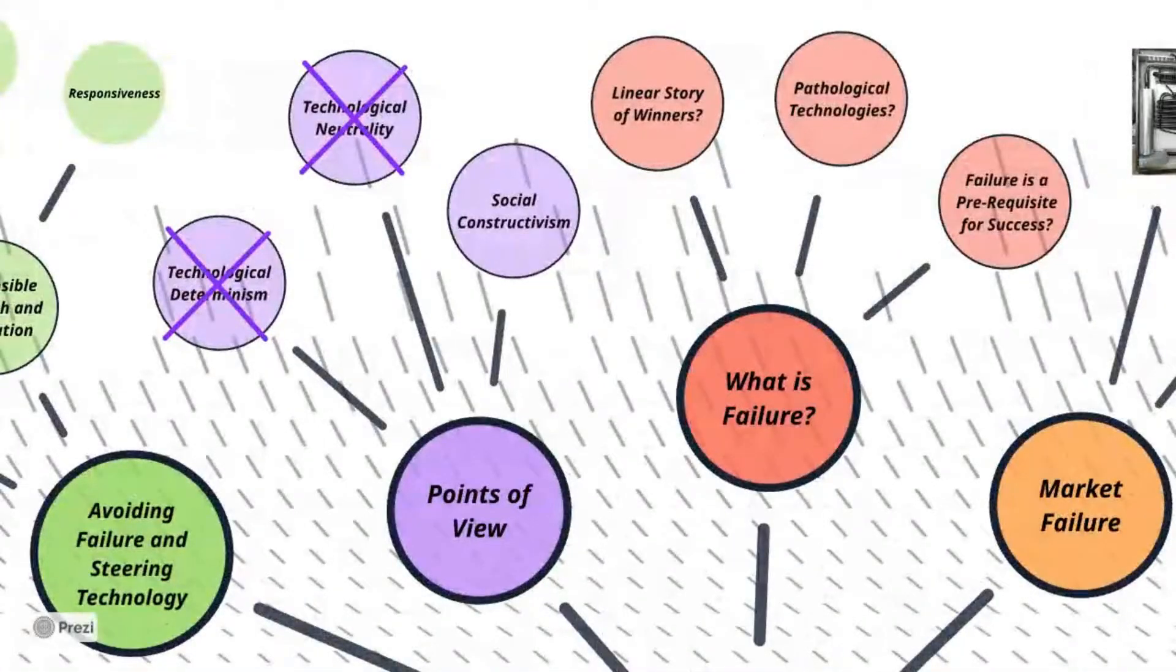So we begin with the first two weeks of the course, where we introduce different schools of thought around technological failure, as well as different historiographies of failure. You can note that even though we briefly explored technological determinism and neutrality, the ultimate perspective of this course was social constructivism.